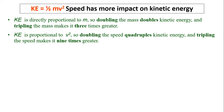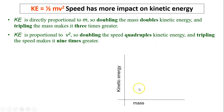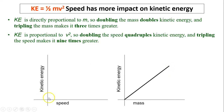In this equation, kinetic energy is directly proportional to speed squared. Therefore, speed has more impact on kinetic energy than mass, because KE is directly proportional to m, but KE is proportional to v squared. When you double the mass, you double the energy. However, when you double the speed, energy increases by a factor of four. A graph of kinetic energy versus mass is a direct linear relationship, while KE versus speed is a parabola.